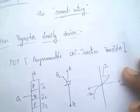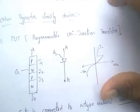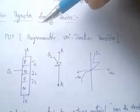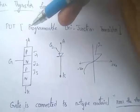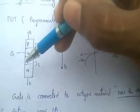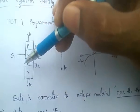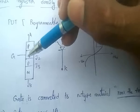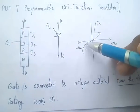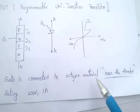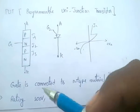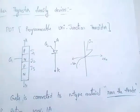Other thyristor family devices. First: PUT — Programmable Unijunction Transistor. The difference from SCR is that in PUT the gate is connected to N-type material, whereas in SCR the gate is connected to P-type material. In PUT, the gate is nearer to the anode. The ratings of PUT are 200V and 1A, and it is used to control power.